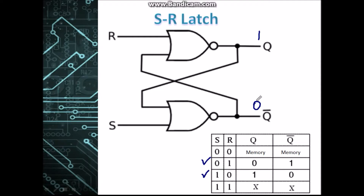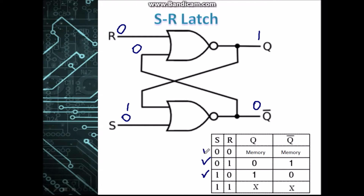Now let's keep these outputs and see what happens when S is 0 and R is 0. This 1 is fed into this NOR gate — a 1 and 0 gives us 0, so Q complement remains the same. This 0 is fed back in and R is 0, so Q also stays the same. When both S and R are 0, Q and Q̄ keep their current state — we call this memory or no change.